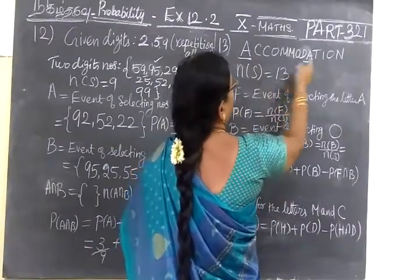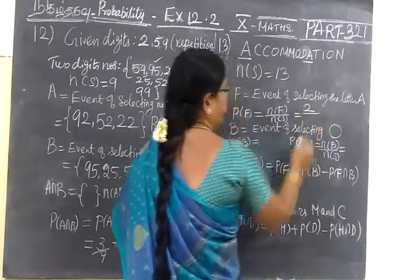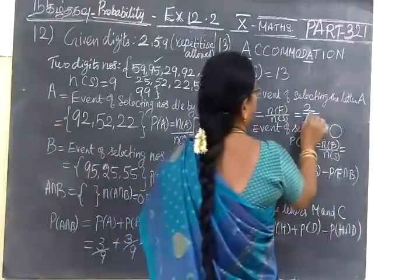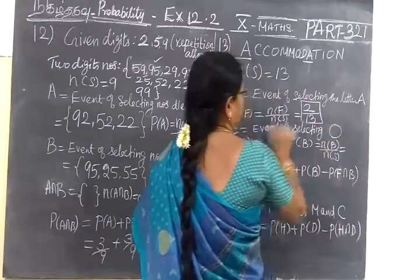So no other way, 1, 2. So N(E), 1, 2, sorry 2 by N(S), 13. So that's easy, which as it is.